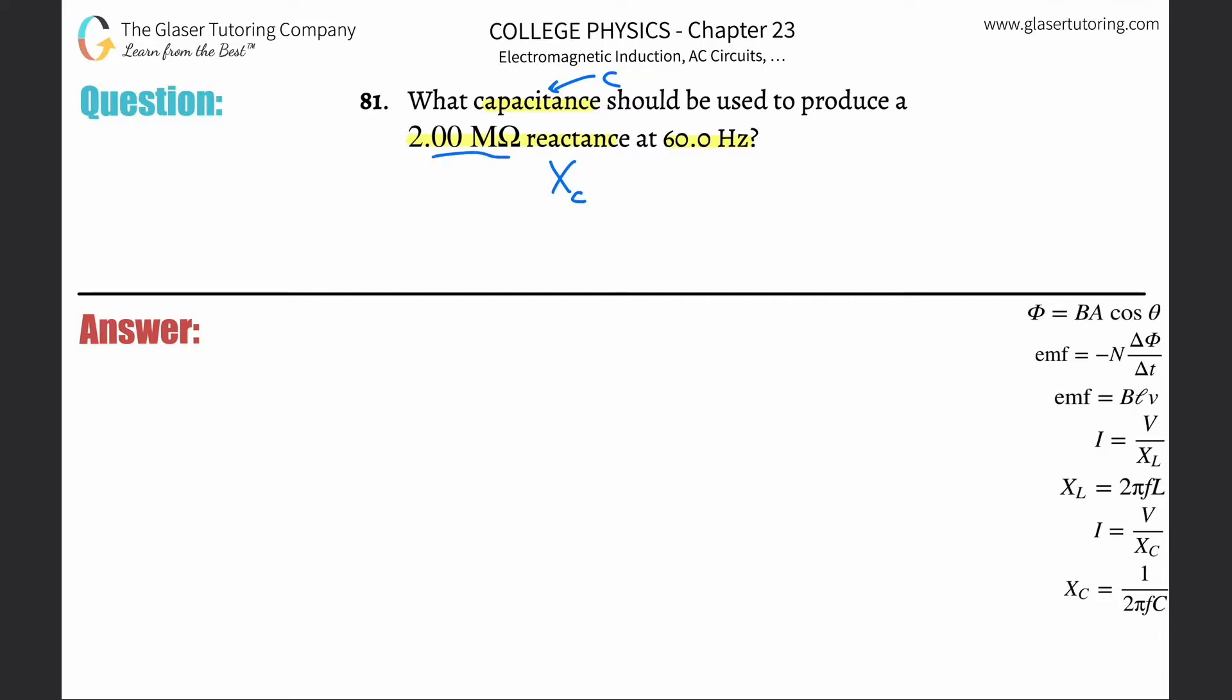So they give us that value, and they also tell us the frequency. So we have to figure out how all these variables relate, and we're going to be dealing with a formula down here on the bottom right. It says that the capacitive reactance is equal to 1 divided by 2 pi times the frequency times the capacitance. Look at how similar it is to the inductive reactance formula.